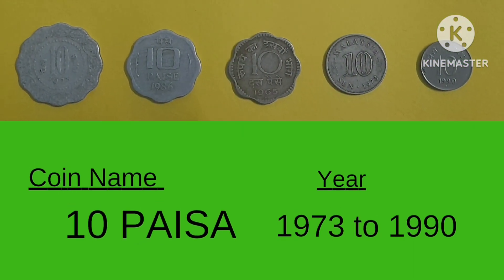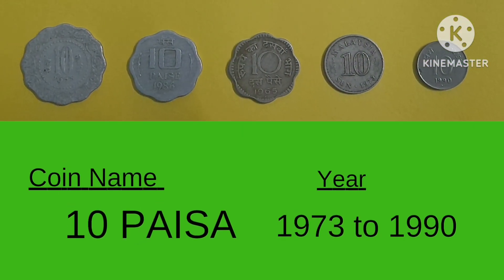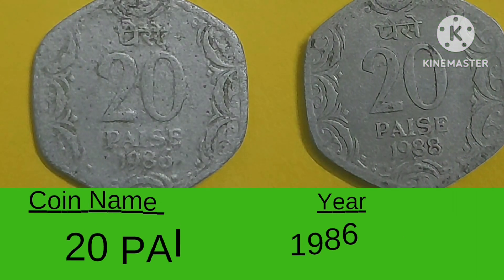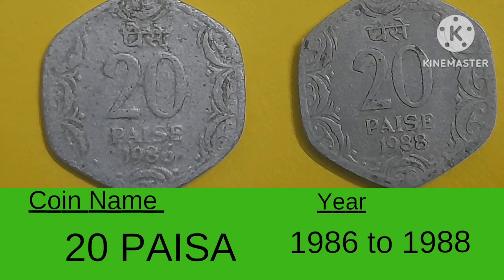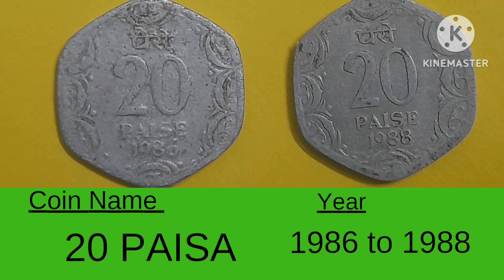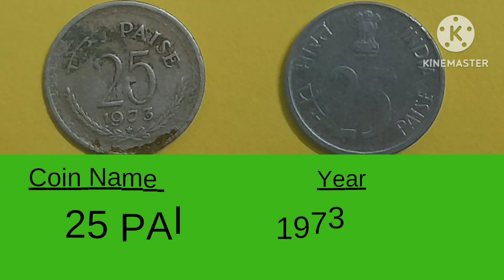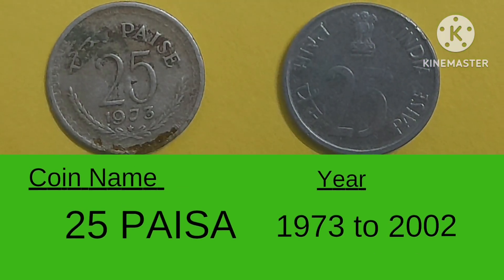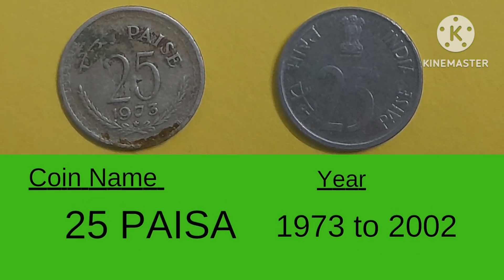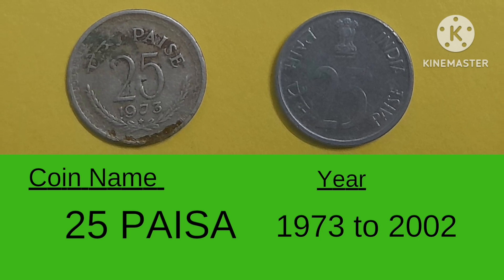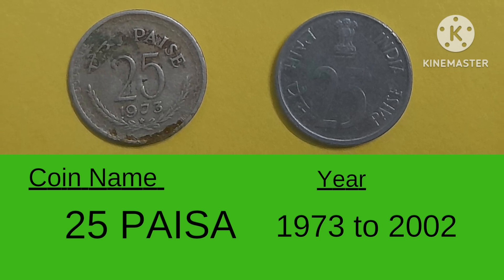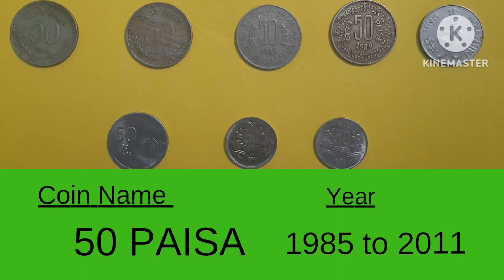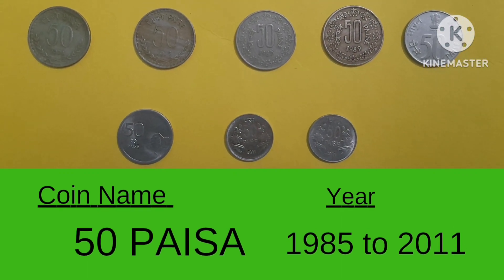Coin name: 5 paisa, year 1975–1991. Coin name: 10 paisa, year 1973–1990. Coin name: 25 paisa, year 1986–1988. Coin name: 25 paisa, year 1973–2002.